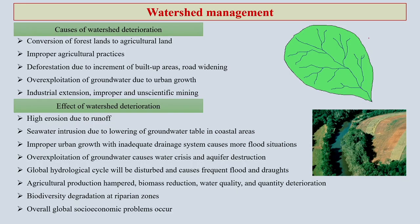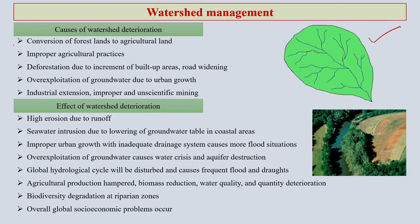Watershed management — as mentioned, a watershed looks like a leaf, with different drainage lines where slope plays an important role. Let us see why we actually need watershed management. Various causes of watershed deterioration have a lot of potential to affect the livelihood and quality of life of the people living in those watersheds. Conversion of forest land to agricultural land often creates a lot of pressure and causes watershed deterioration.